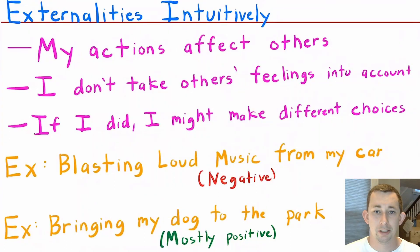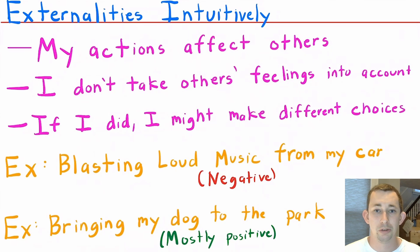Hi guys, welcome back to In Case of Econ Struggles. Today we're talking about externalities. We're going to start off by talking about what externalities are intuitively, then the different types of externalities, how to graph externalities, and at the end we're going to allude to the different ways in which we can deal with those externalities, but we will get more into detail on exactly how we deal with externalities in future videos.